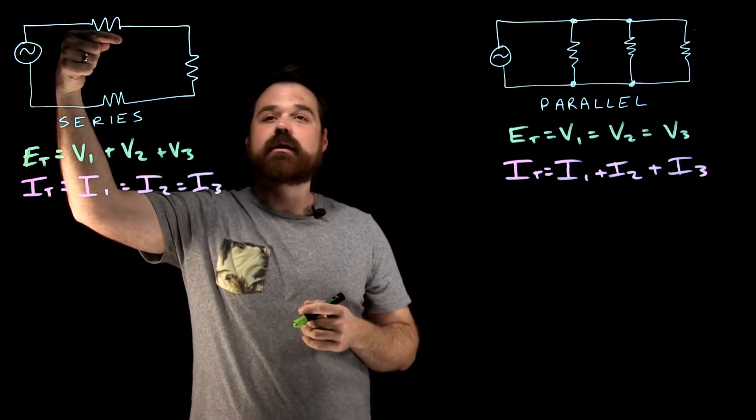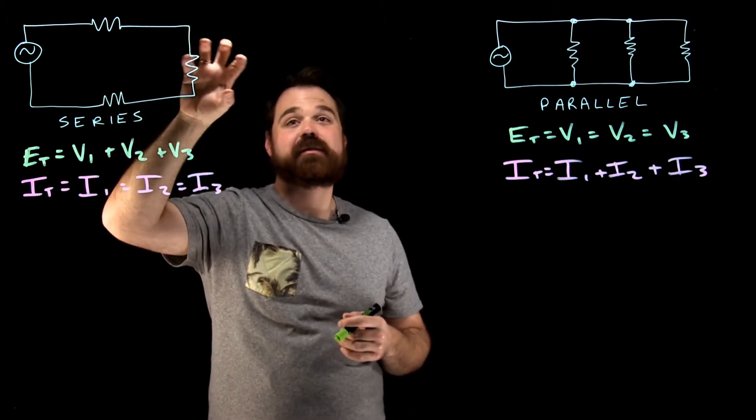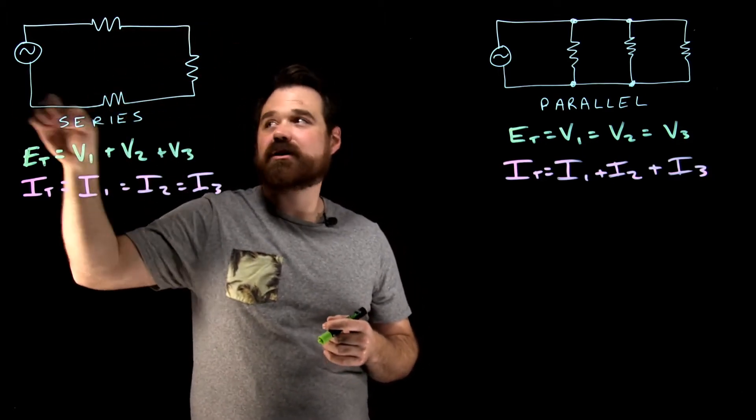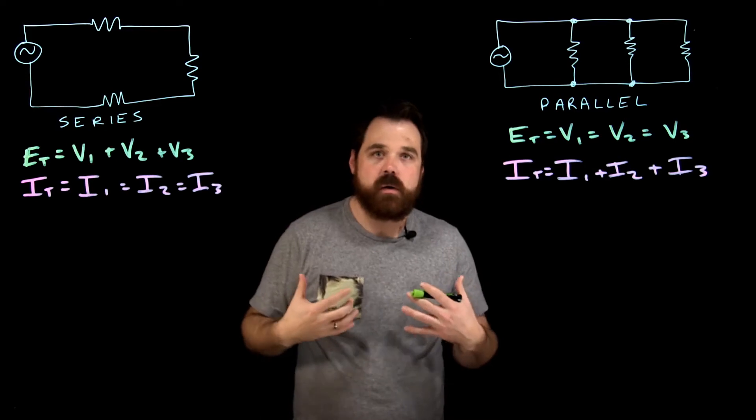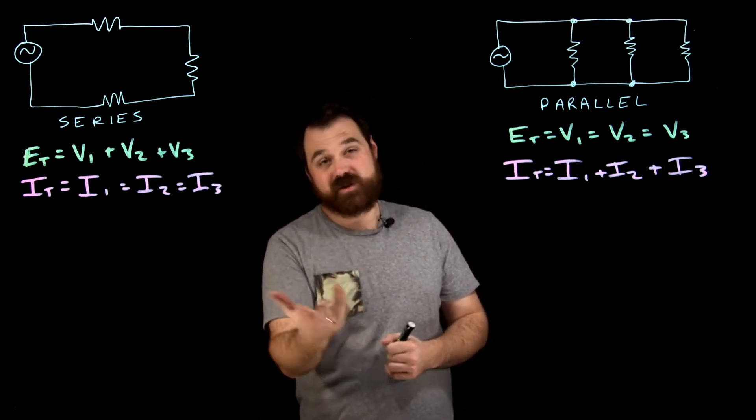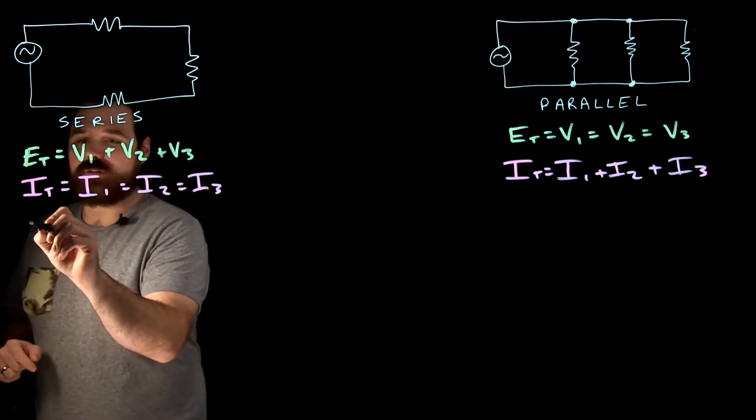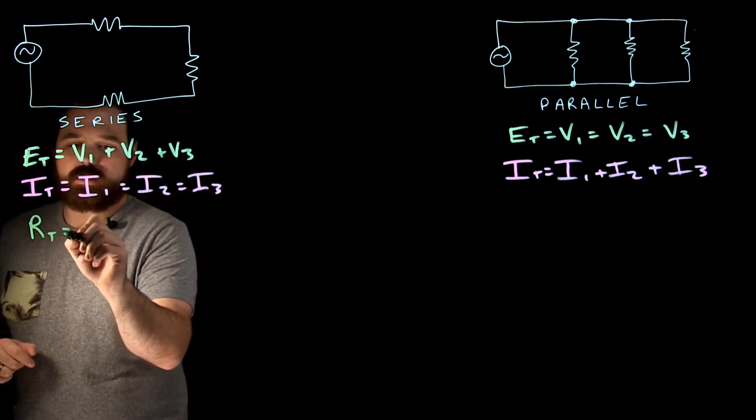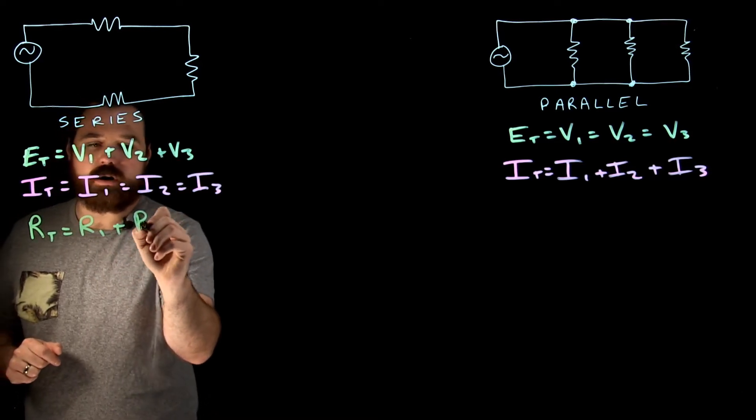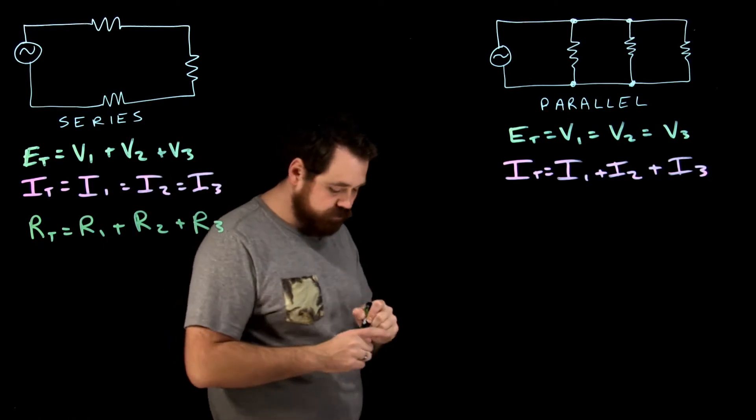First, I need to overcome this resistive value, then this one, and then this one to get back to the source. All of the resistance in a series circuit adds up directly. So R total equals R1 plus R2 plus R3.